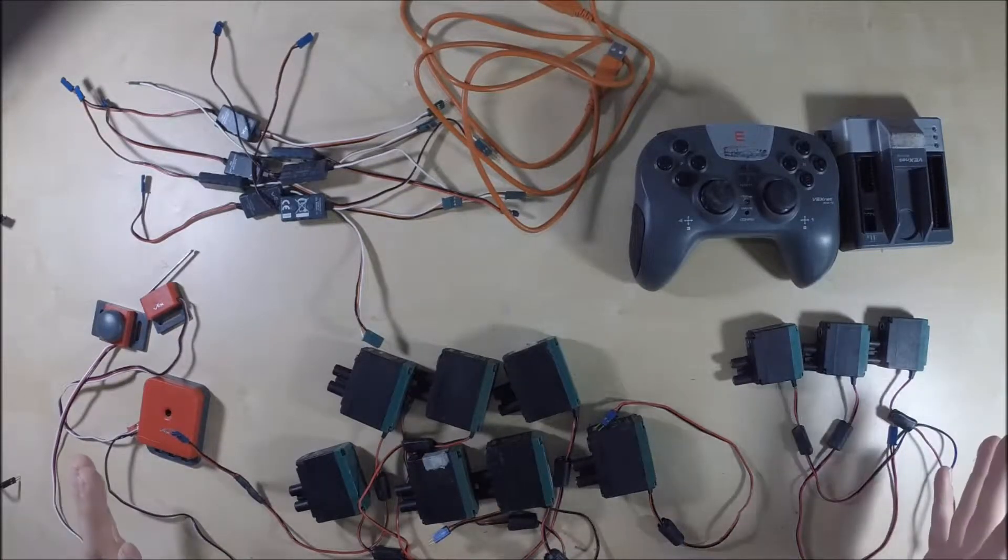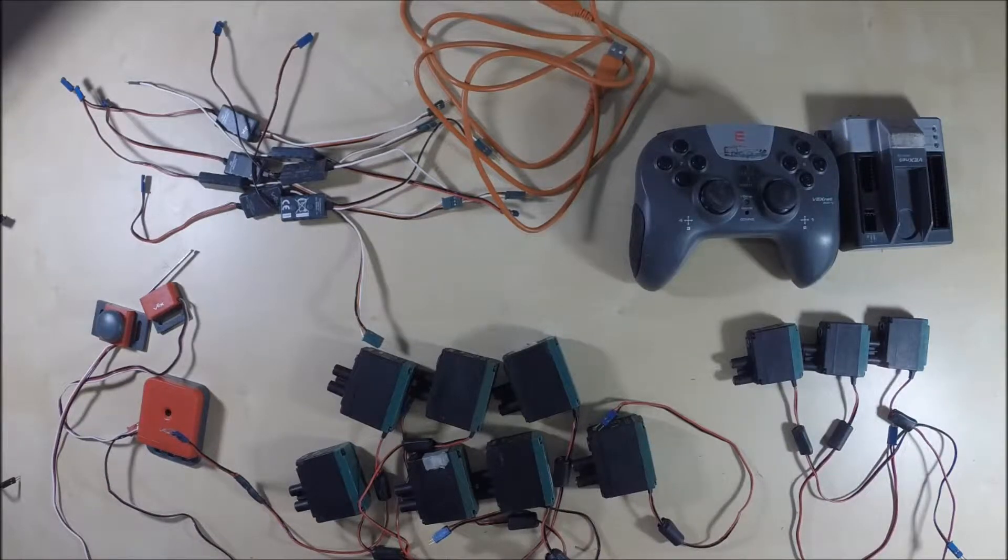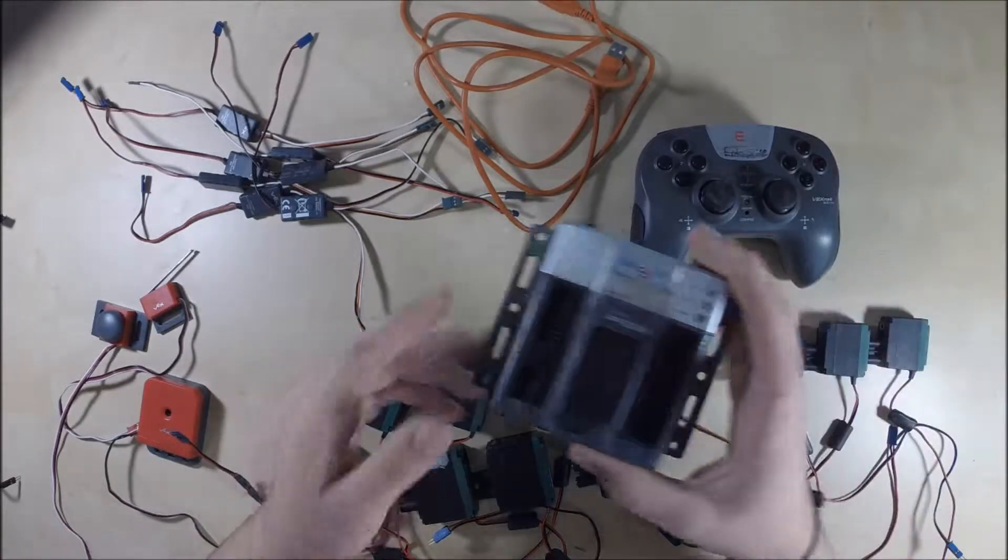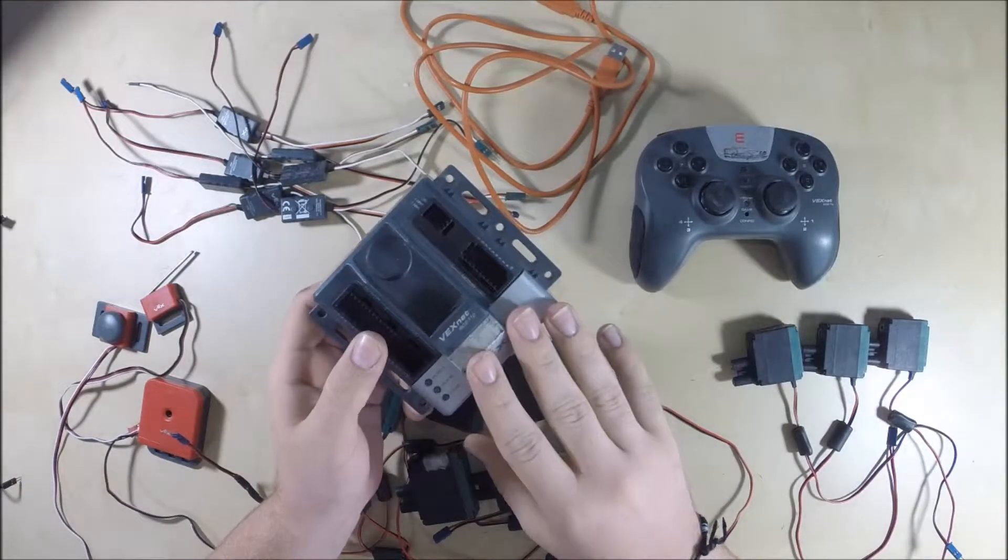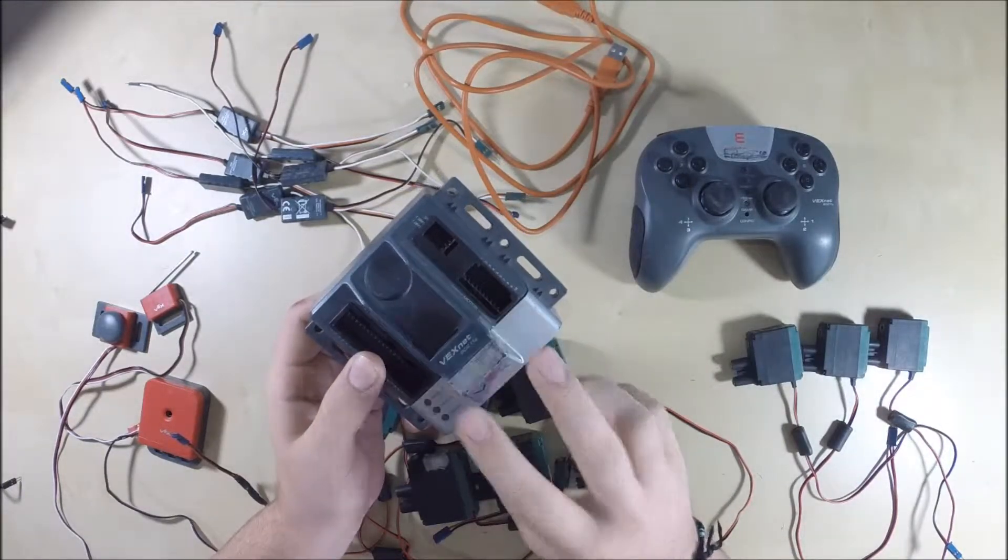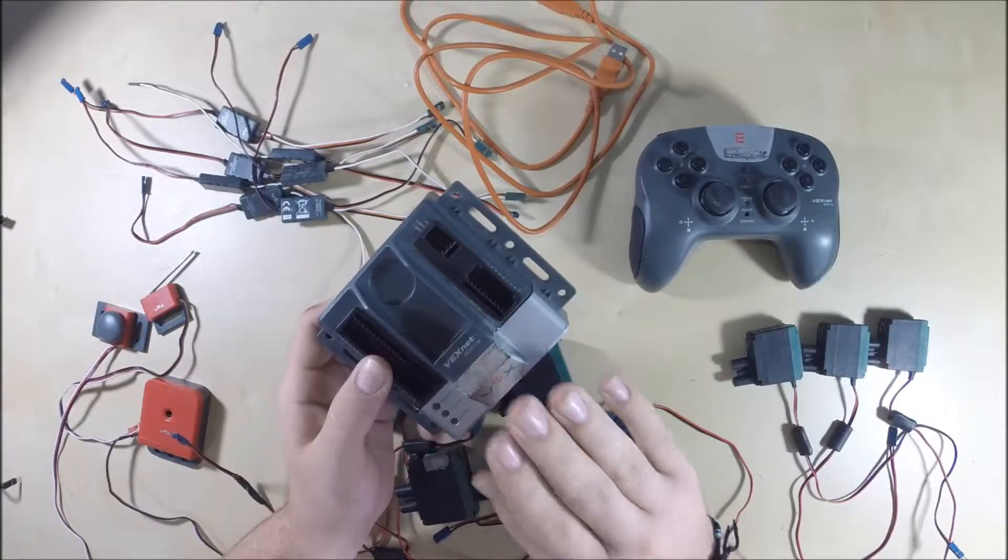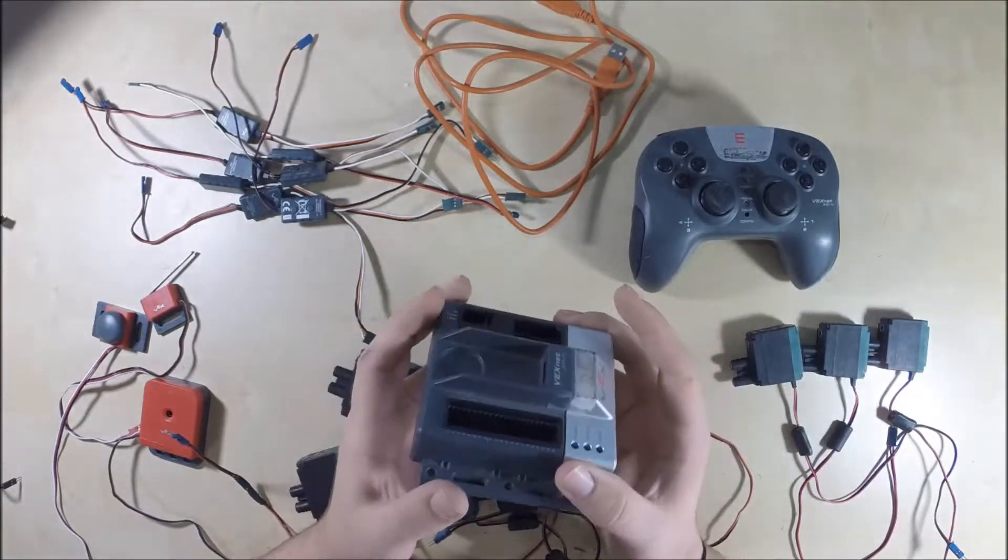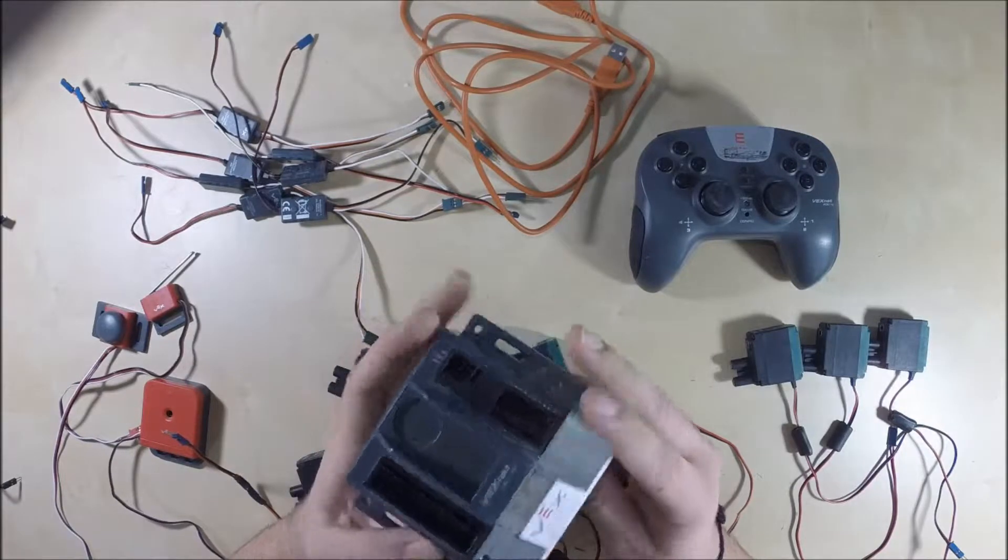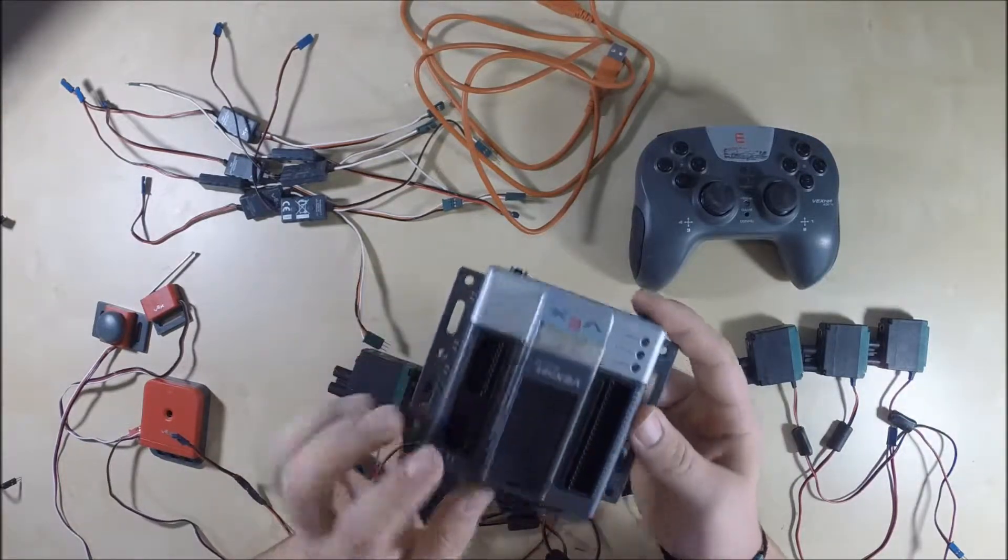All right, now here we have all the electronic components. The brain of the entire operation is the cortex. A lot of our cortexes are very used and kind of beat up, and they may not operate completely correctly. So if you're having trouble, get someone to help you and see if we can troubleshoot it. And if it needs to be retired, we'll retire it and get you a new one.